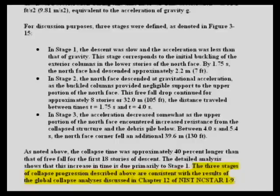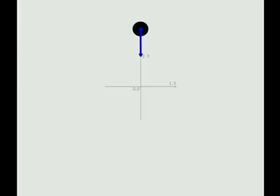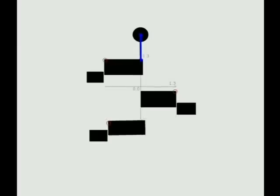That was before they were forced to acknowledge that free fall actually occurred. Once they acknowledged free fall, they claimed without elaboration that their new analysis was consistent with the results of the global collapse analysis. Anything at an elevated height has gravitational potential energy. If it falls and none of the energy is used for other things along the way, all of that energy is converted into kinetic energy — the energy of motion — and we call it free fall.